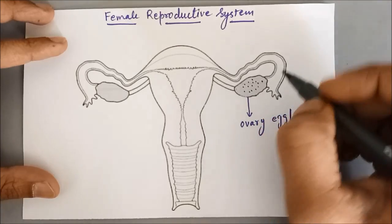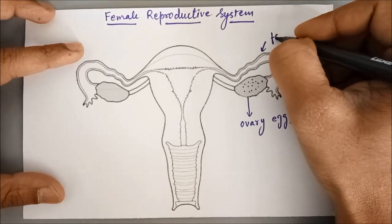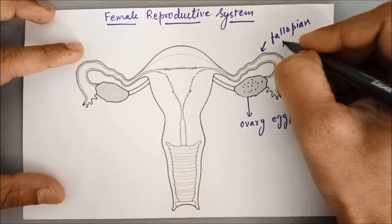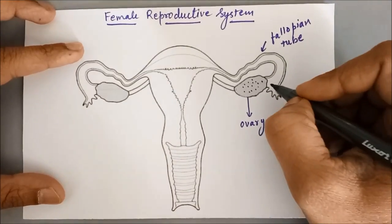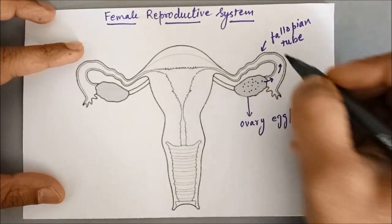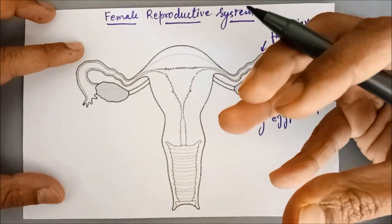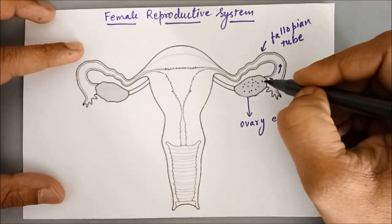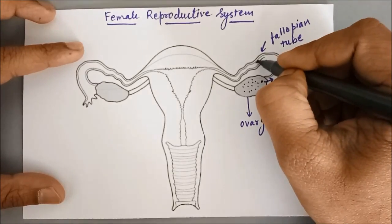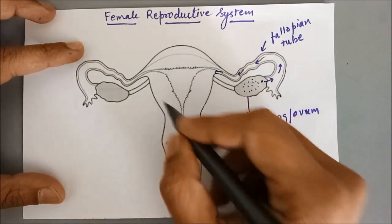Now these long ducts are called fallopian tubes. Their main job is to take the egg from the ovary. You can see they are conical in shape, with finger-like projections, and they help the egg cell travel to a muscular chamber called the uterus.